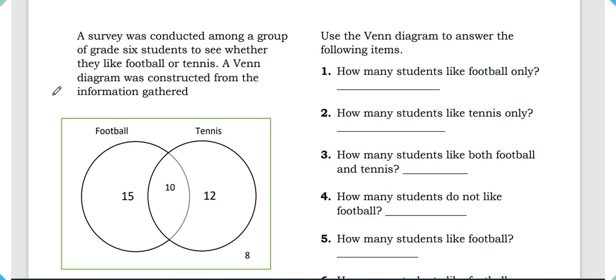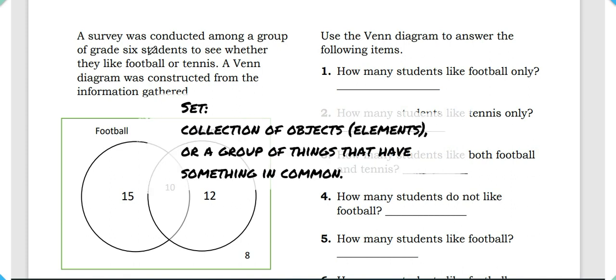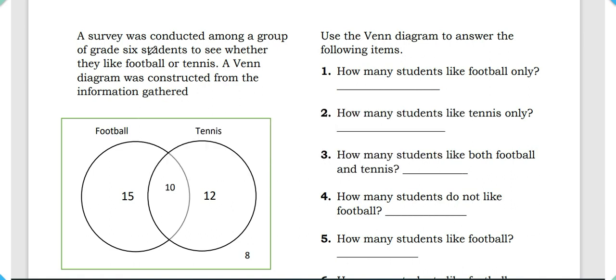What is a set? A set is a collection of things — a group of things that has something in common. In our example, we're looking at a group of Grade 6 students. What they have in common is that they're all Grade 6 students. So a set is a group of things that has something in common.